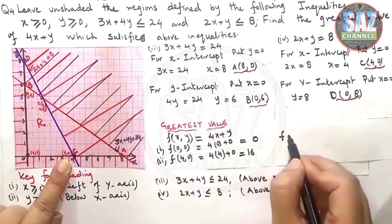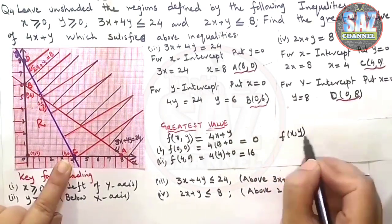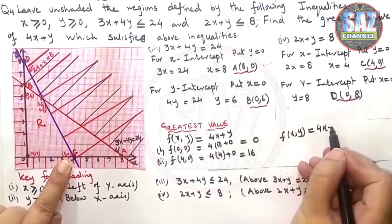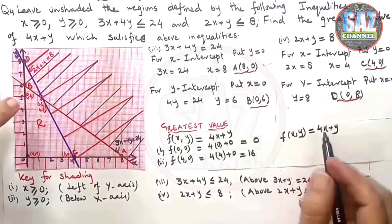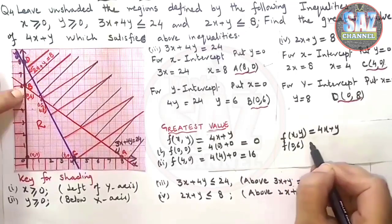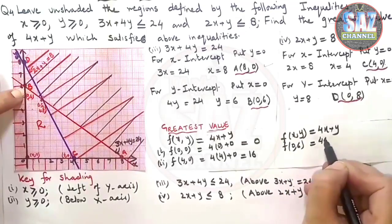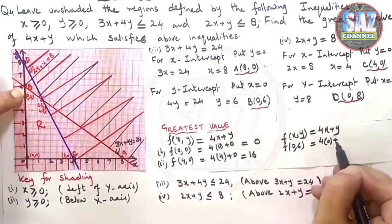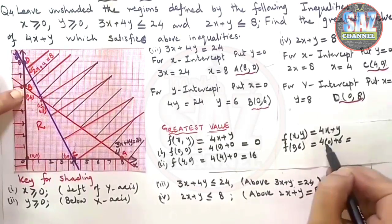Coming to the third point, f(x, y) = 4x + y. My third point can be (0, 6).